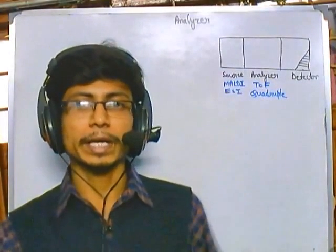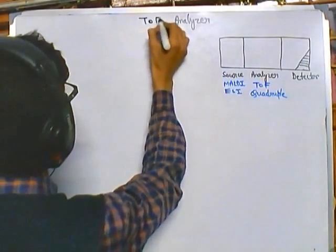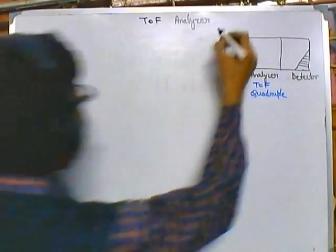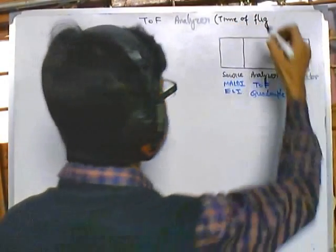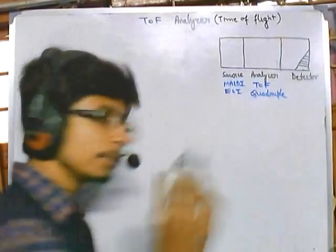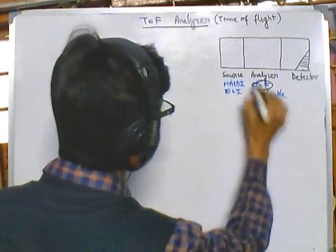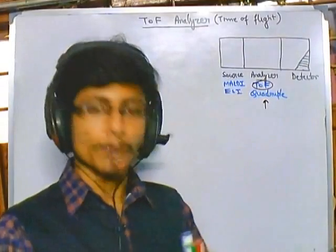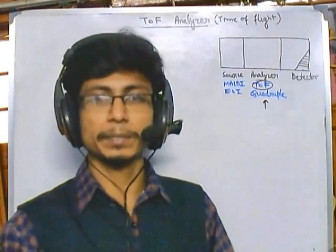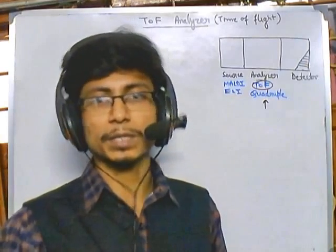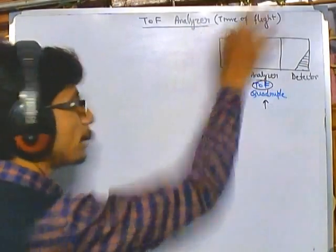Welcome back. We are talking about different types of mass spec instrumentation. In this video we'll be talking about what is called a TOF analyzer, or Time of Flight analyzer. The full name is Time of Flight, and it is called this because it depends on time for the separation of charged particles. It is also an analyzer — the part playing the important role of segregating or separating the mixture of charged particles.